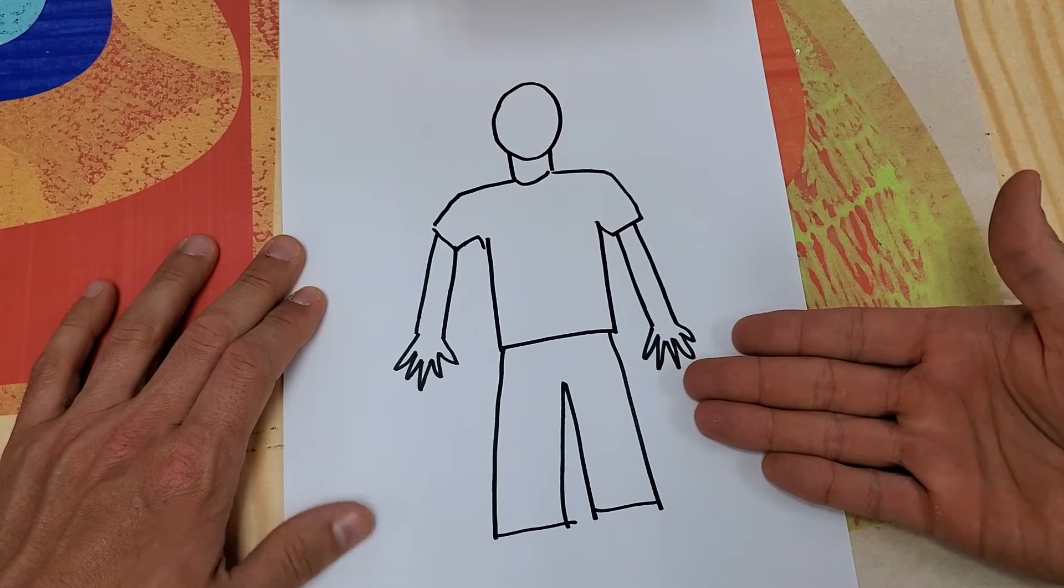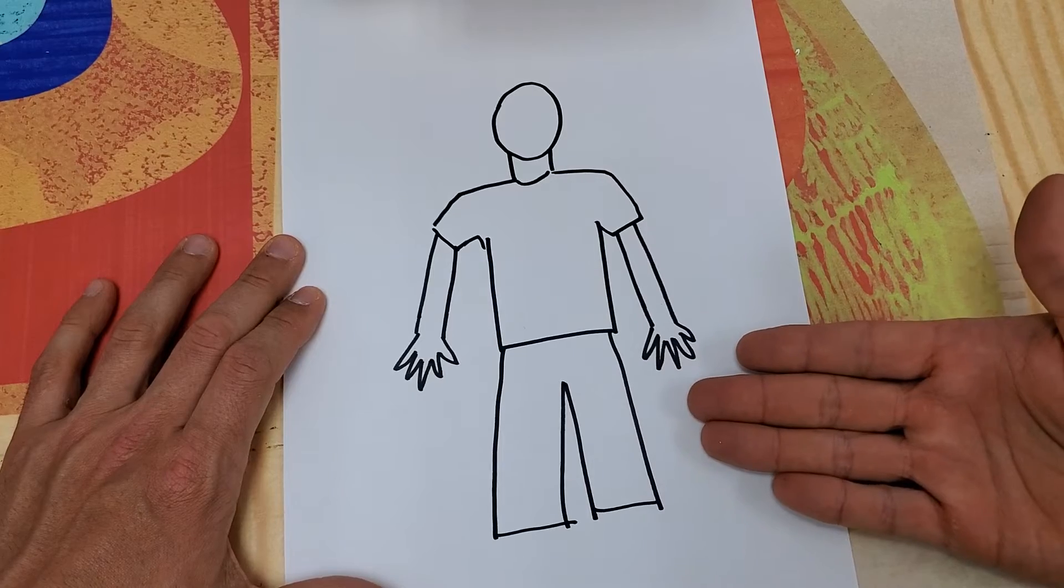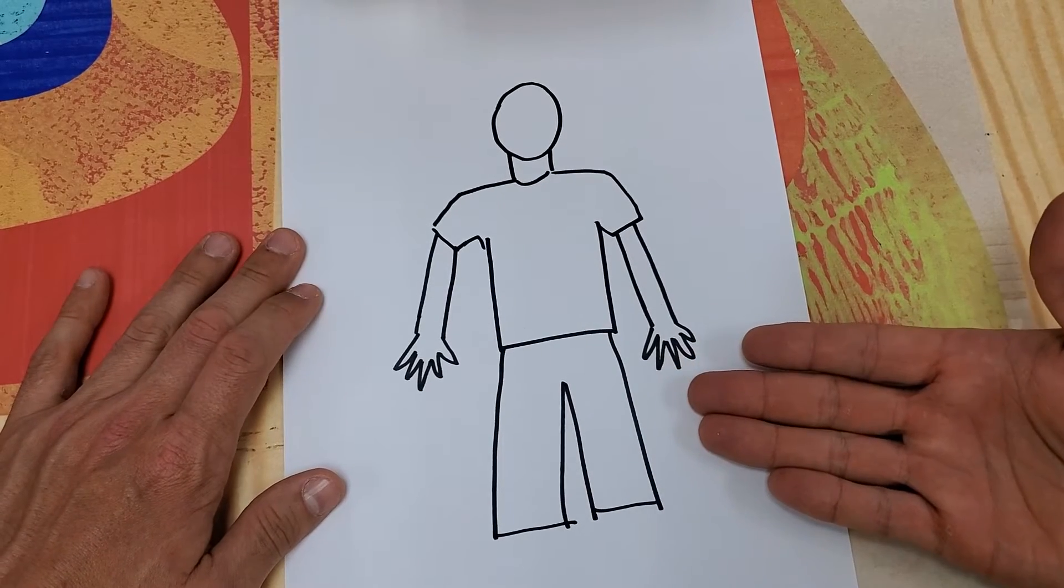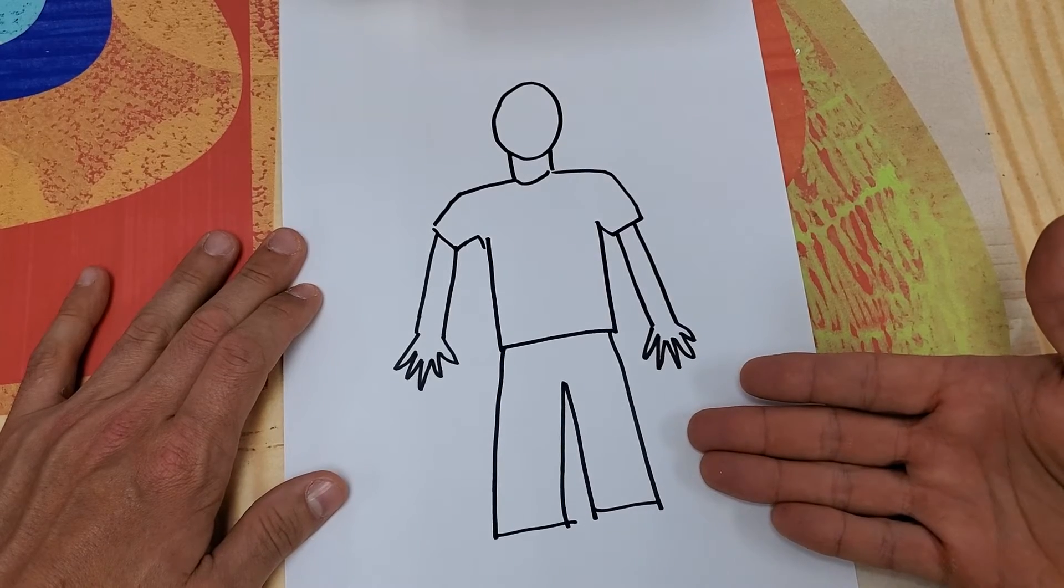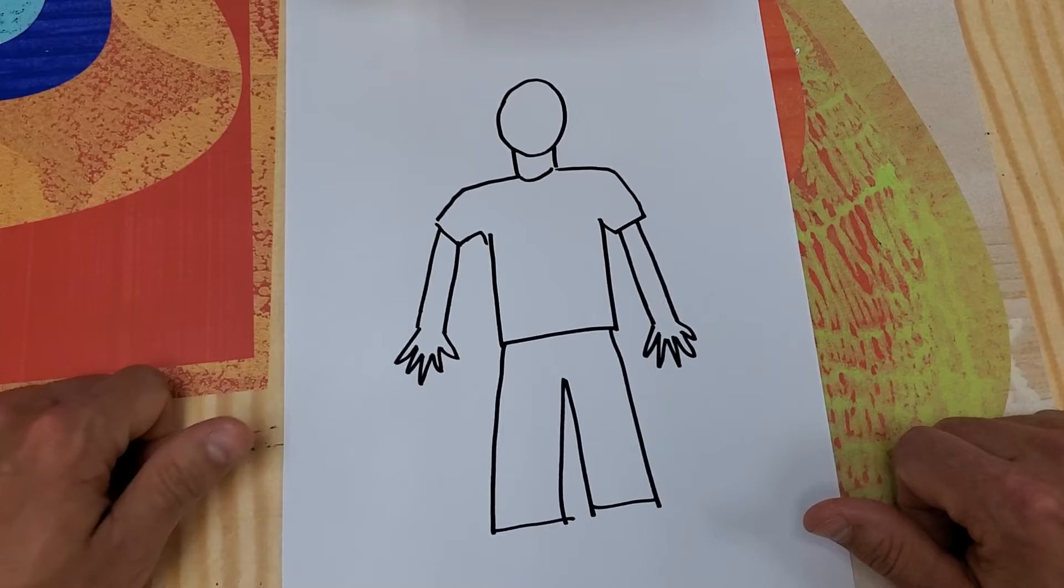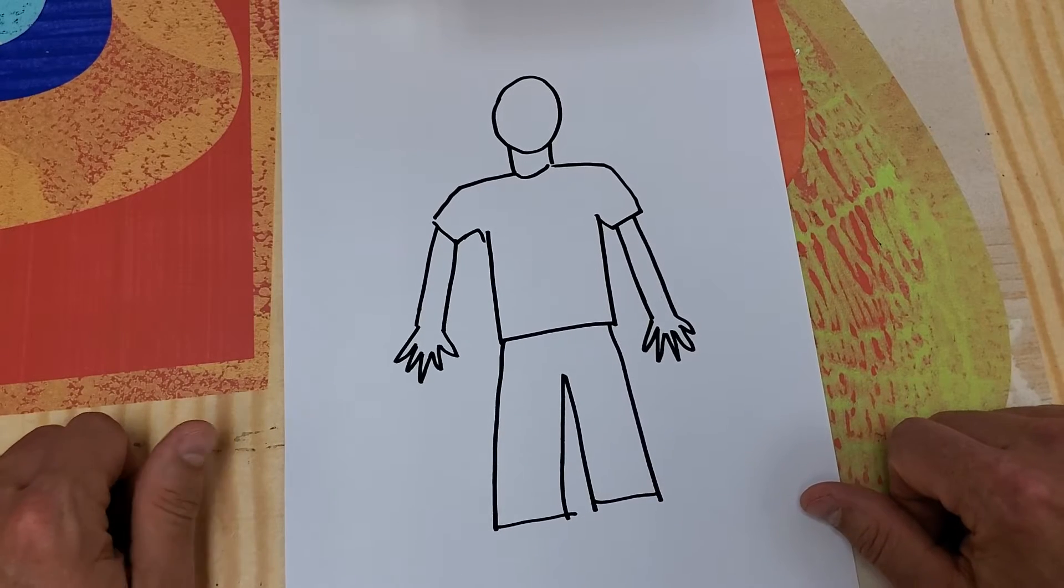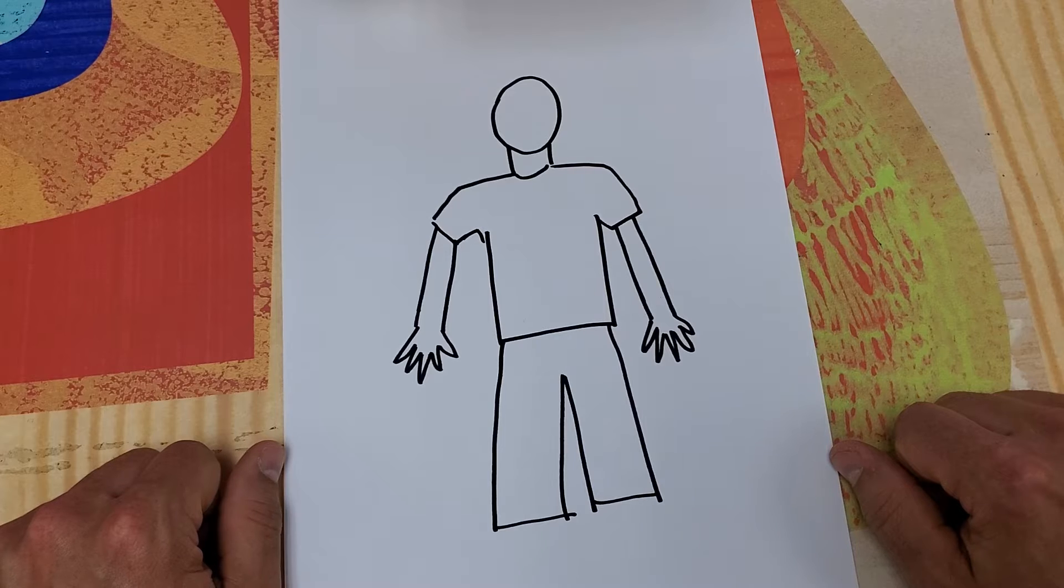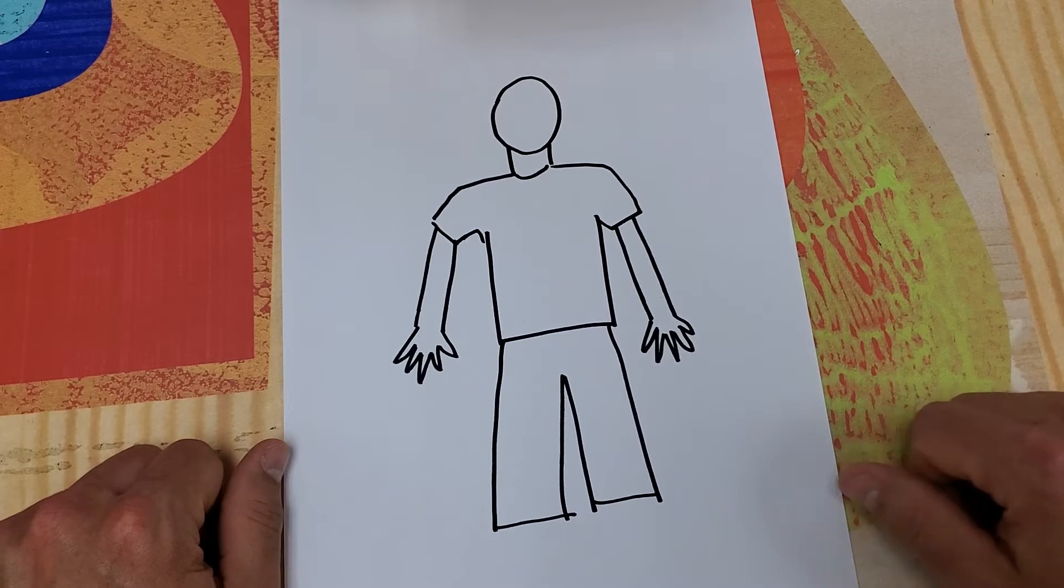And if you want your self-portrait to not have pants, if you're thinking of a different type of clothing for your self-portrait, that would be fine as well. You could just erase, think of the shapes of that type of clothing and draw that as well. So let's begin.